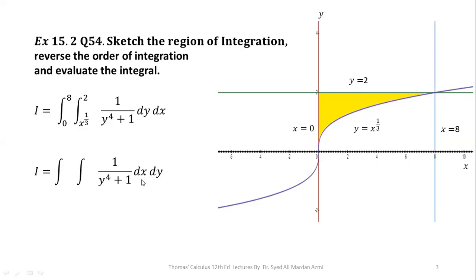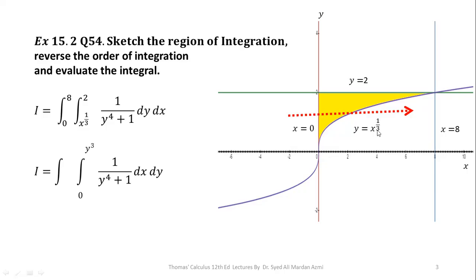After switching, x becomes our inner variable. To find the limits of x, we use the arrow technique — passing a horizontal arrow through the region. The arrow enters through the boundary x equal to 0 and exits through the boundary y equal to x to the power 1/3, giving us x from 0 to y cubed. For the outer variable y, the region ranges from 0 to 2, so those are the new outer limits.